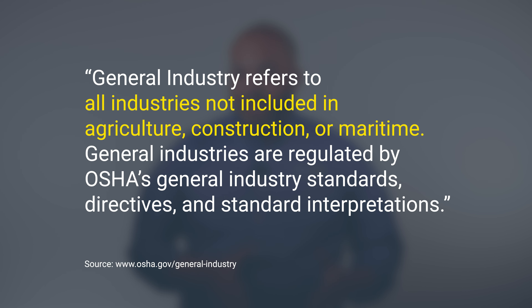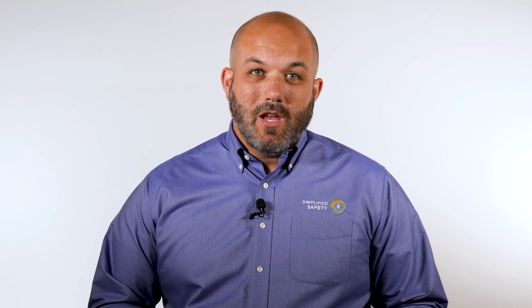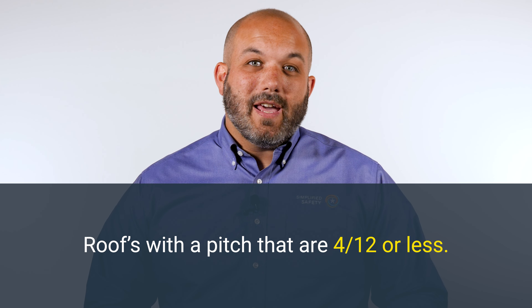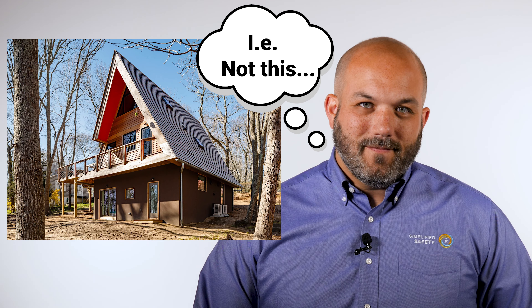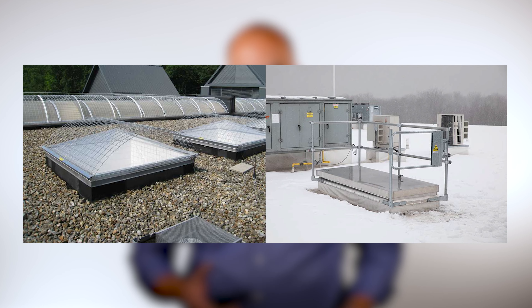Now that we know what temporary and infrequent means, let's talk about when it applies. Temporary and infrequent is part of the general industry standard for federal OSHA, and that means it may not apply to you if you're in a specific industry like maritime or agriculture. It also may not apply if you have a state-run OSHA agency like in California. Temporary and infrequent also only applies to low-slope roofs, which are roofs that have a pitch of 4:12 or less, and it only applies to roof edges — not roof holes like a skylight or a roof hatch.